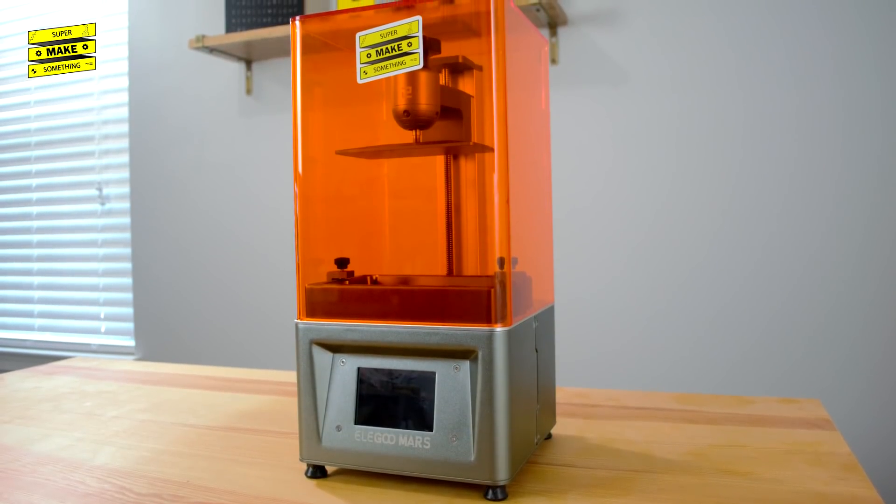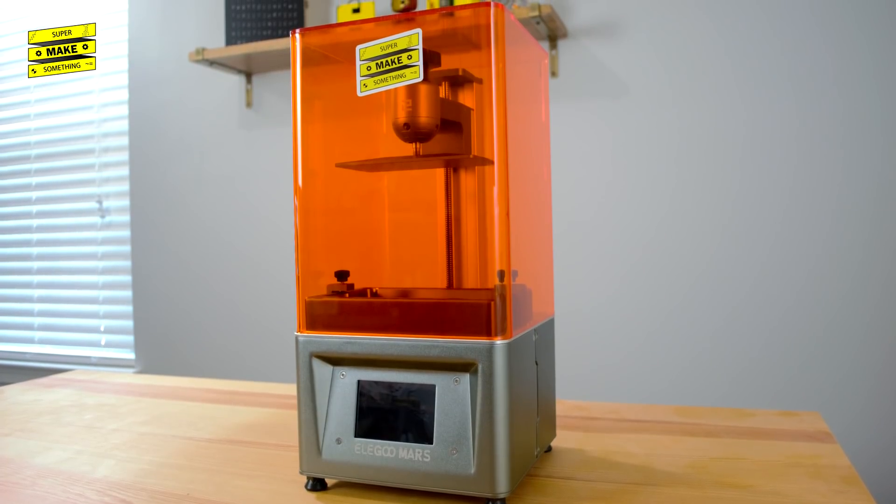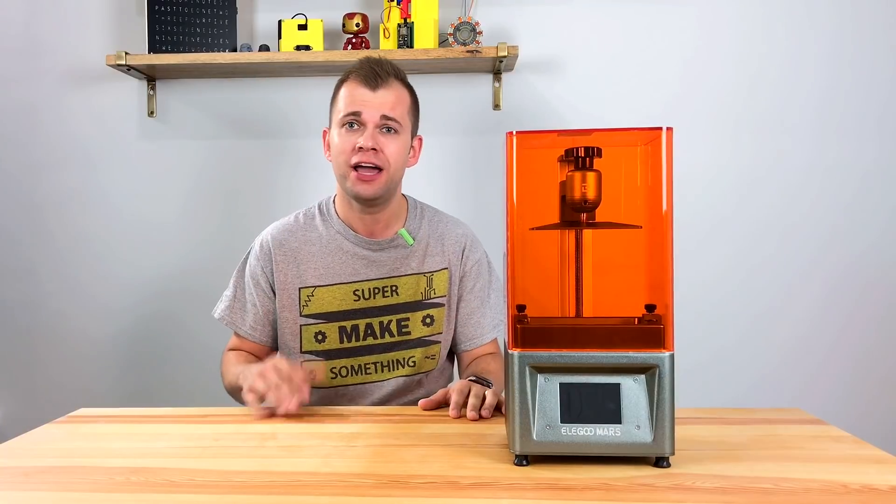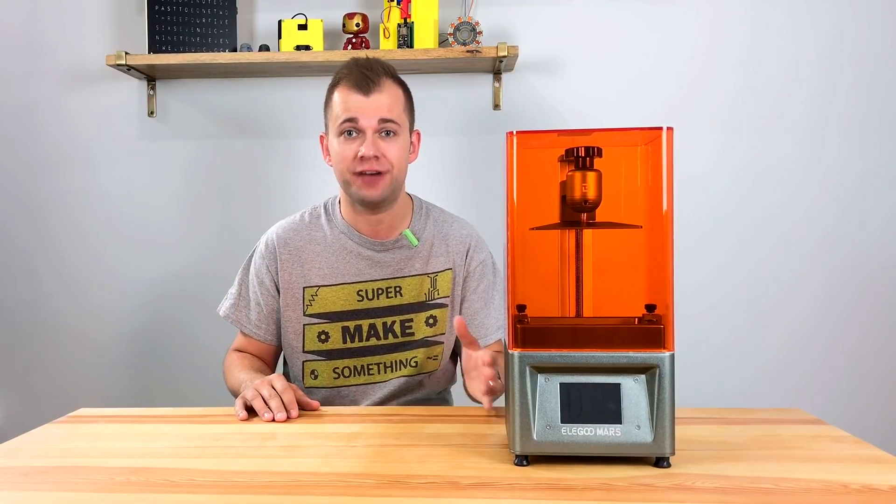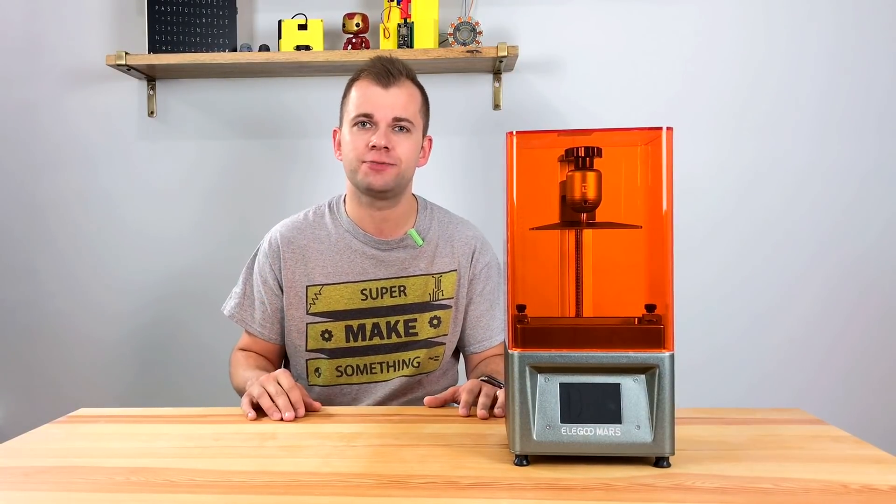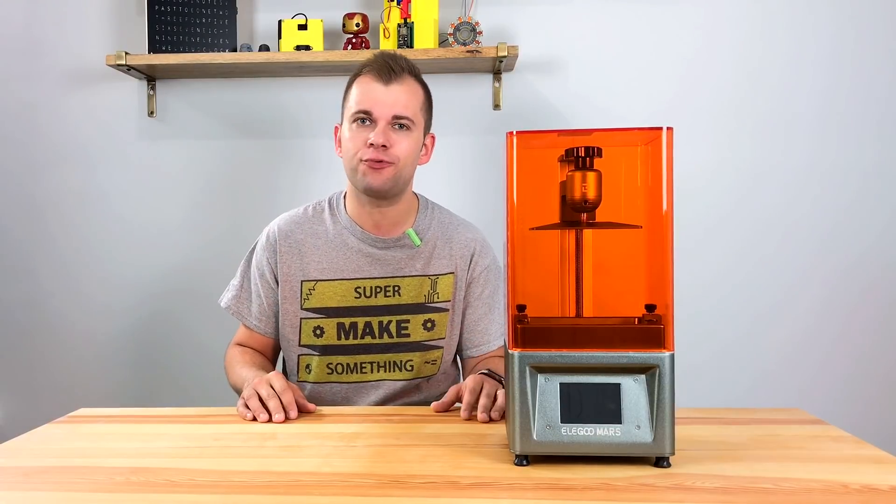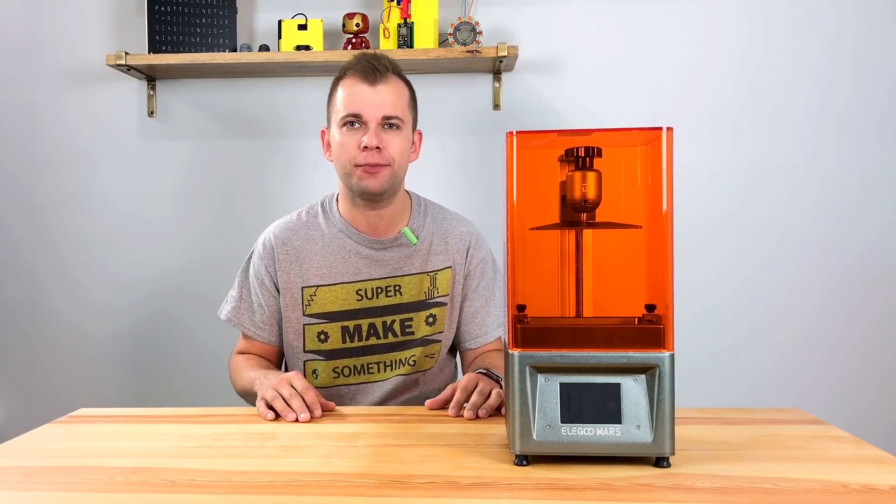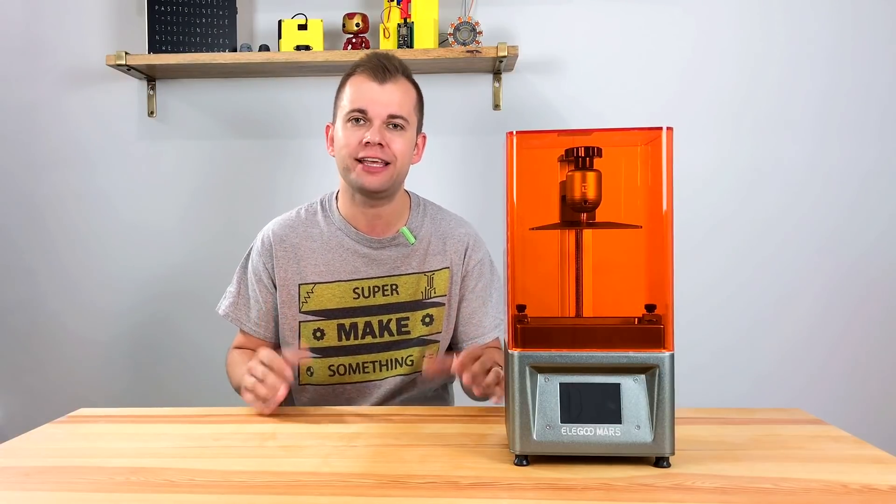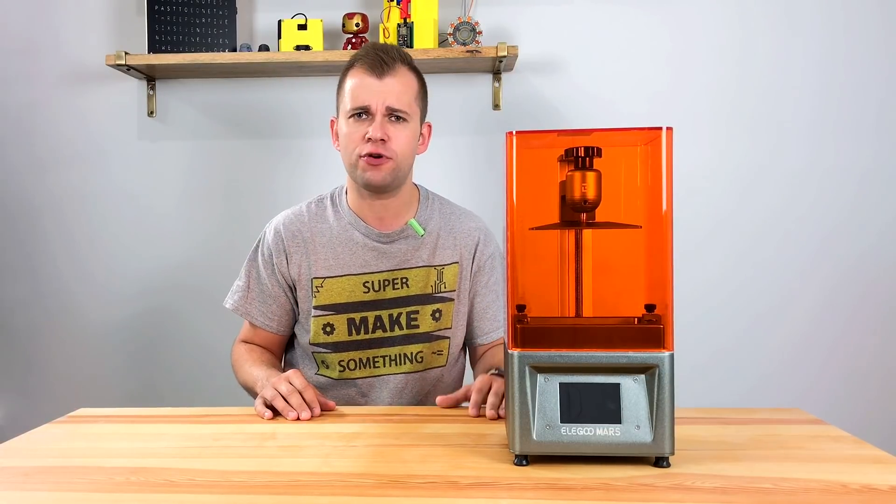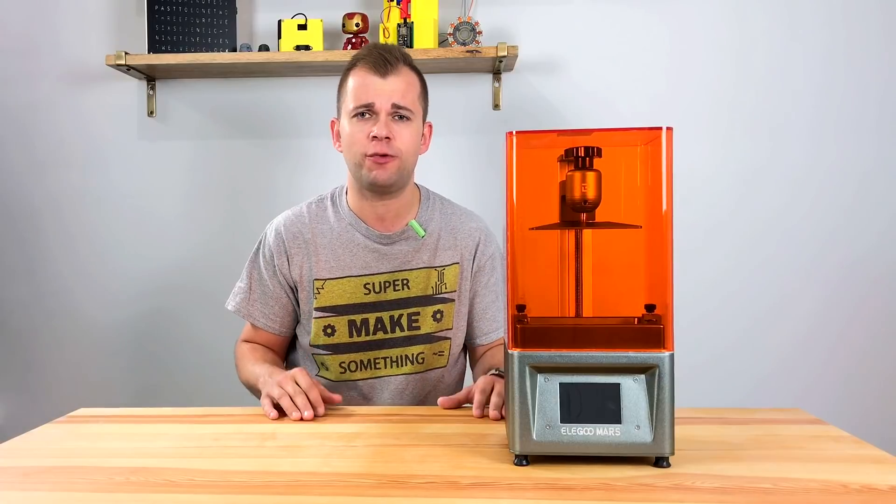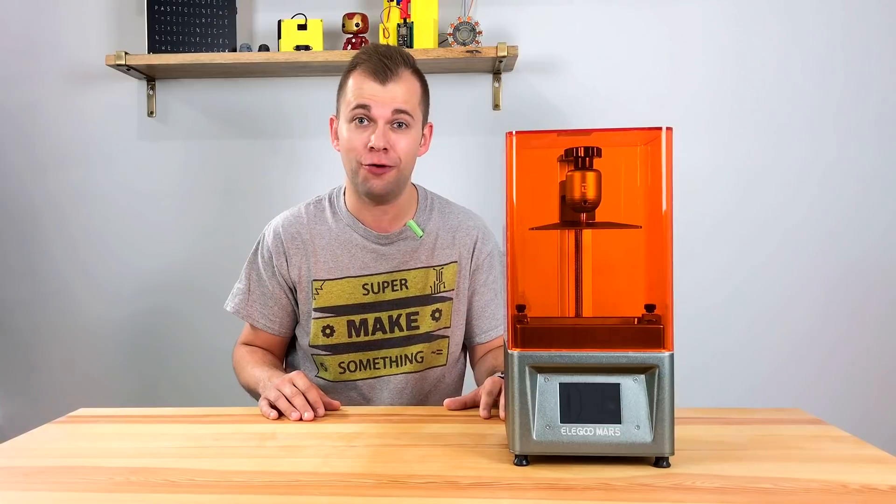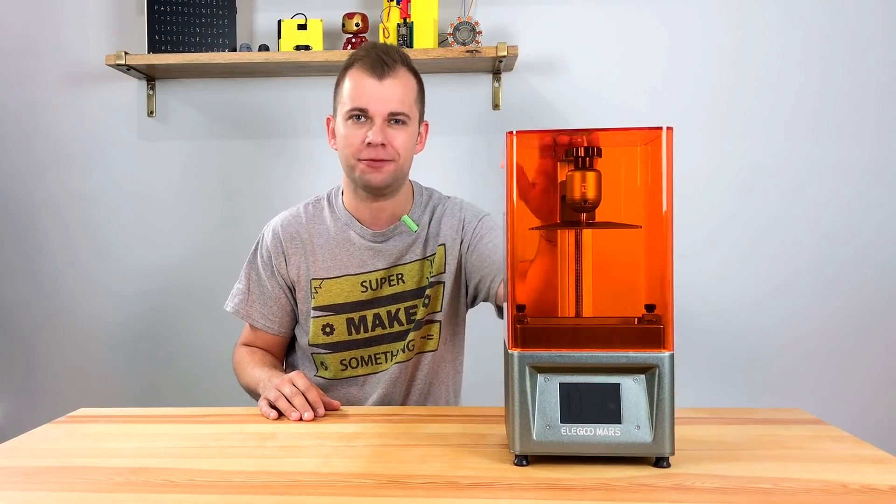The Elegoo Mars definitely gets the super make-something seal of approval. While both FDM and resin-based printing approaches can be used at home, each approach has its own unique advantage. For consumer and hobbyist machines available today, FDM printers have a larger build volume and easier cleanup, but resin machines are capable of producing smaller, more highly detailed prints. The printing approach you choose should depend on the specific requirements of your project, but if you're looking to get into resin 3D printing at home, I can fully recommend picking up the Elegoo Mars.